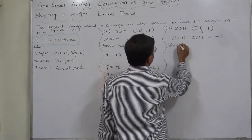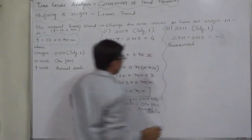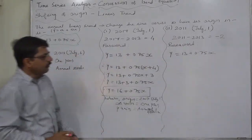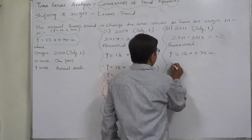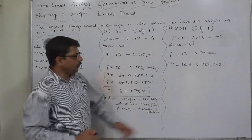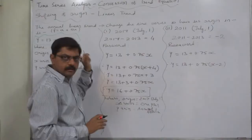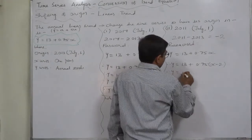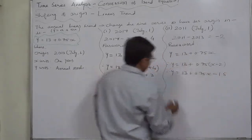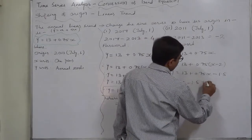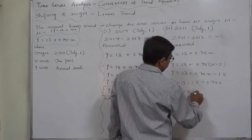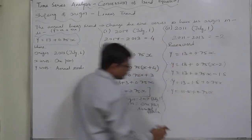The original trend given is y equals to 13 plus 0.75x. Now we want to go back by 2 years, so the new trend will be 13 plus 0.75 into (x minus 2). From the original origin we are going back 2 years. Simplification gives 0.75x minus 1.5, that means 13 minus 1.5 plus 0.75x, and therefore y equals to 11.5 plus 0.75x.